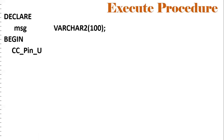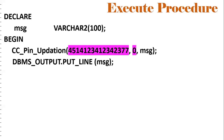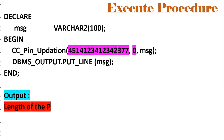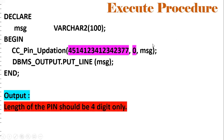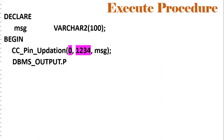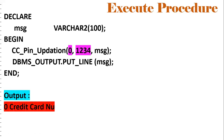Now let's execute the updated procedure using an anonymous block. For a valid credit card number but a PIN of only one digit ('0'), the output is: 'Length of the PIN should be four digits only' — the user will correct it and enter four digits. In another negative scenario, with a four-digit PIN but an invalid credit card number ('0'), the output is: 'Credit card number is not valid.' These are the two negative scenarios handled by our exception logic.